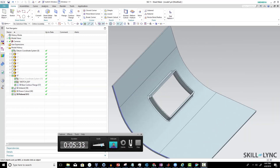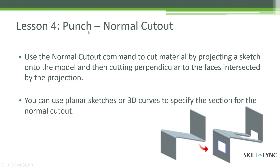The next topic is normal cutouts under punch. Basically, we do the cut normal to the flanges. If you use only an extrude cut, the cut goes normal to the sketch plane only. But with a normal cutout in sheet metal, it goes along the flanges and makes the cut. Always use normal cutout in sheet metal — it is the best recommended approach, not extrude cut, because extrude cut won't follow sheet metal characteristics like bending K-factor and related parameters.